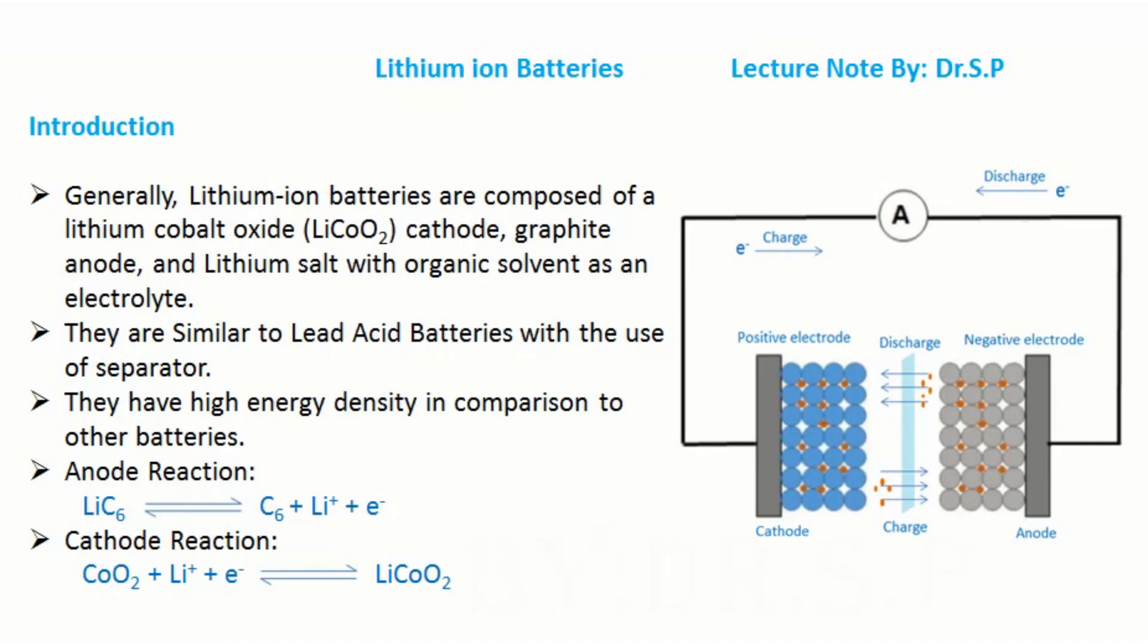At the anode there is oxidation and at the cathode, there is reduction. When the battery is charging, the lithium cobalt oxide positive electrode gives up some of its lithium ions, which move through the electrolyte to the negative graphite electrode and remain there. The battery stores energy during this process.